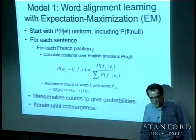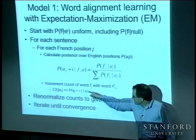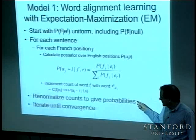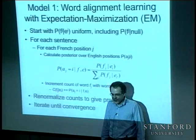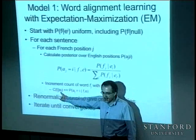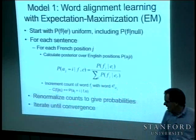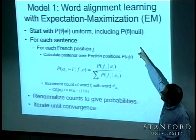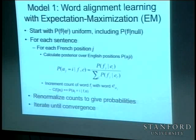You do this over the entire corpus — this is the E step of the EM algorithm. At the end, you have all of these fractional counts, and you just renormalize them to turn them into probabilities. You total up the fractional counts for a particular E_I and divide through by that total to get the probability of F_j given E_I. You have new estimates, and you go back up to the top and repeat. You keep repeating this for a while, and you get a translation model.